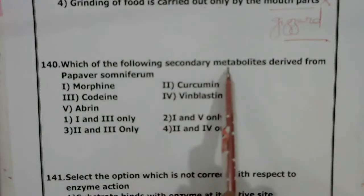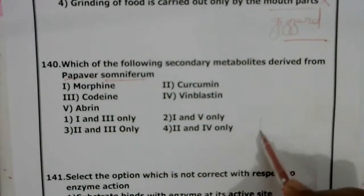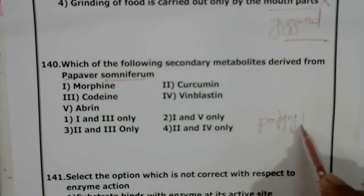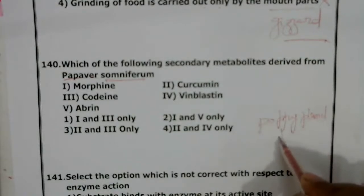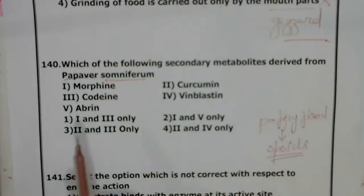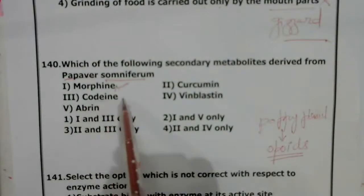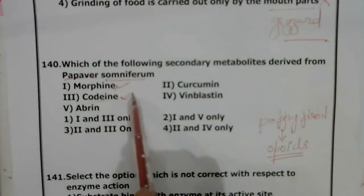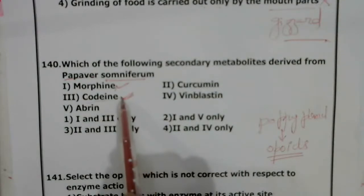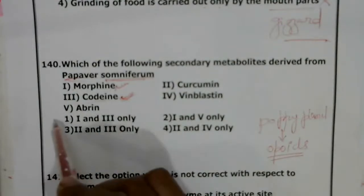Question 140: Which of the following secondary metabolites are derived from Papaver somniferum? This is the poppy plant. From the poppy plant, opioids can be obtained. Among the options, morphine and codeine are opioids — codeine is commonly used in cough syrups. Both can be derived from Papaver somniferum, so the answer will be 1 and 3.